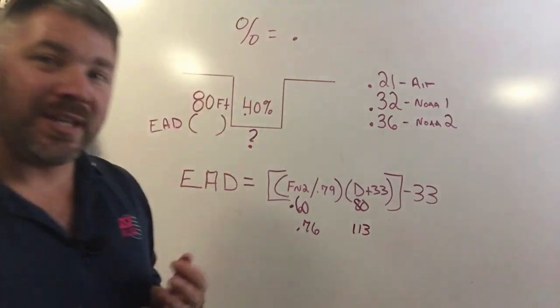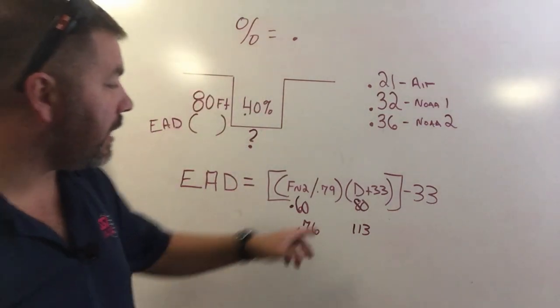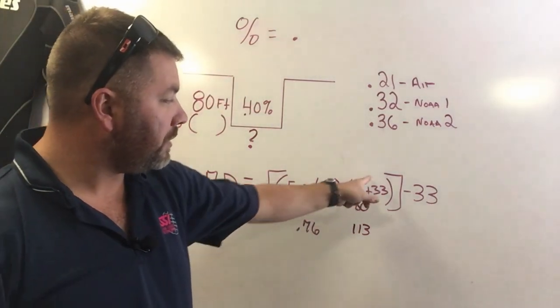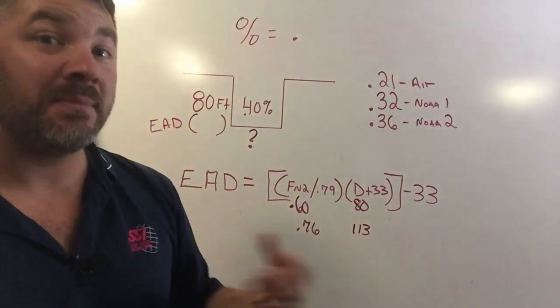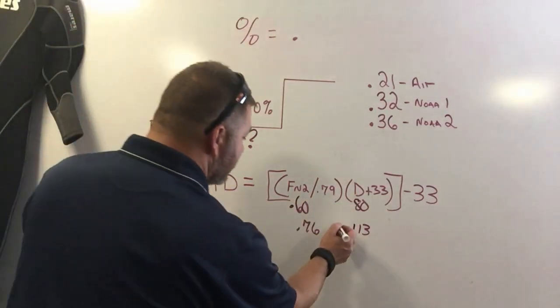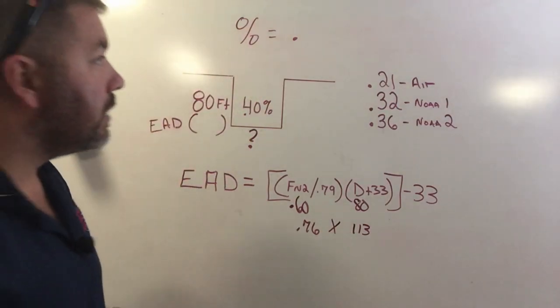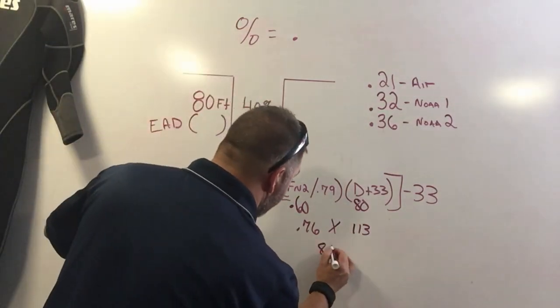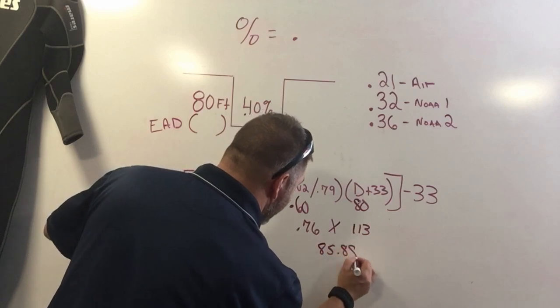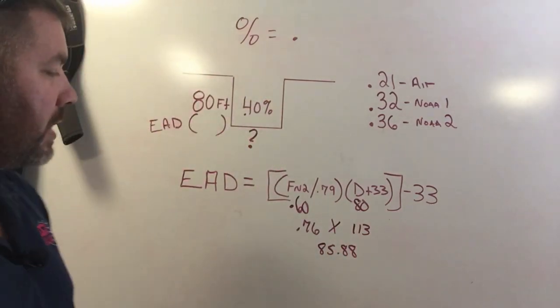Now I'm still inside the bracketed area, and since this was part one and this is part two, the parenthesis says I need to times the two together. So I will simply times 0.76 by 113, and my answer there is 85.88. If you want to round up to 86, you can as well.